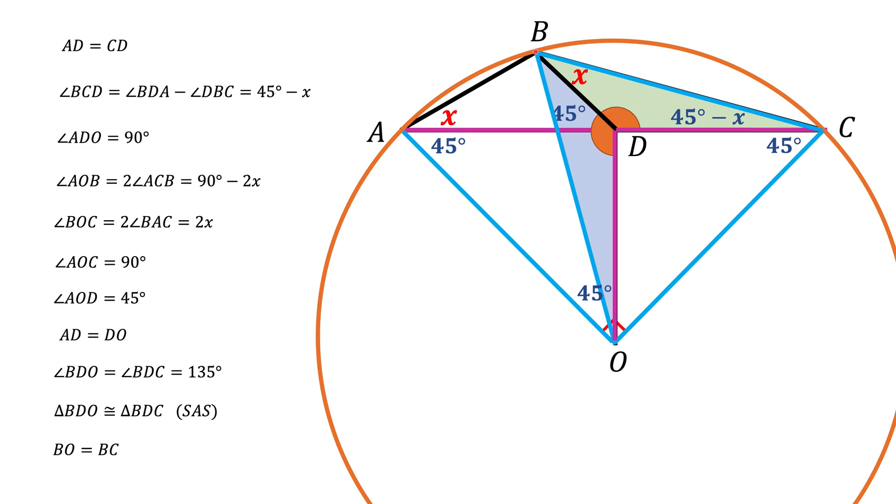But now look at the triangle BOC. It's an equilateral triangle. So in the equilateral triangle, all the angles should be 60 degrees, including the angle B, which is 45 plus x. So 45 plus x should be 60 degrees, and that means that x should be 30 degrees. And that's the final answer.